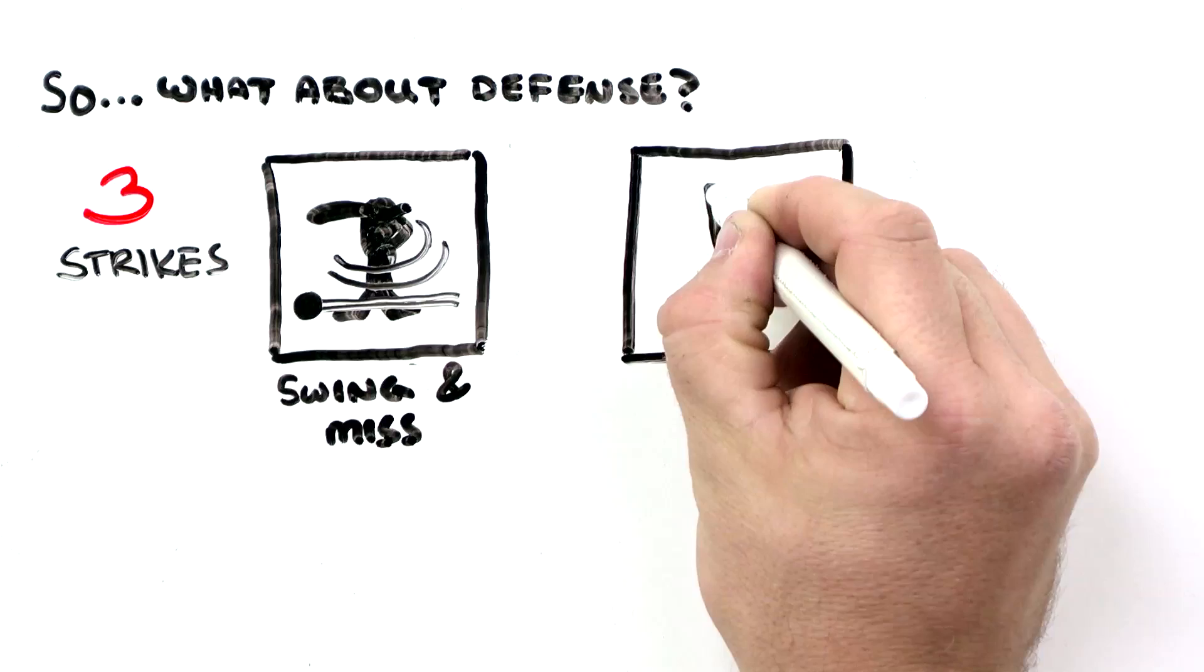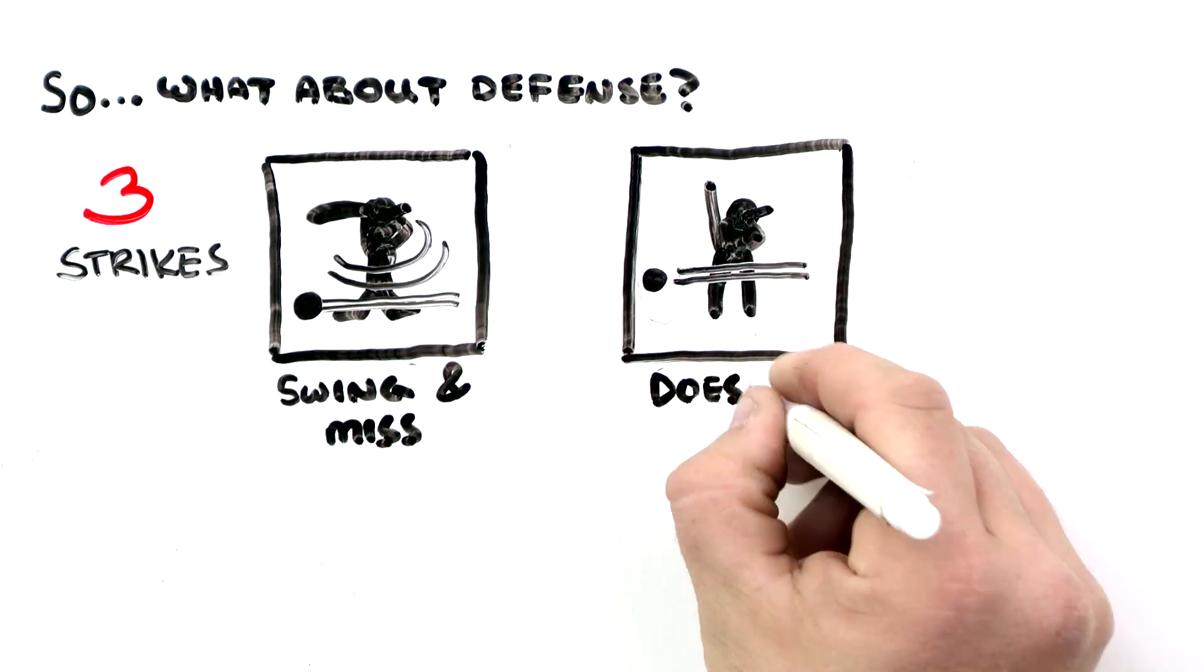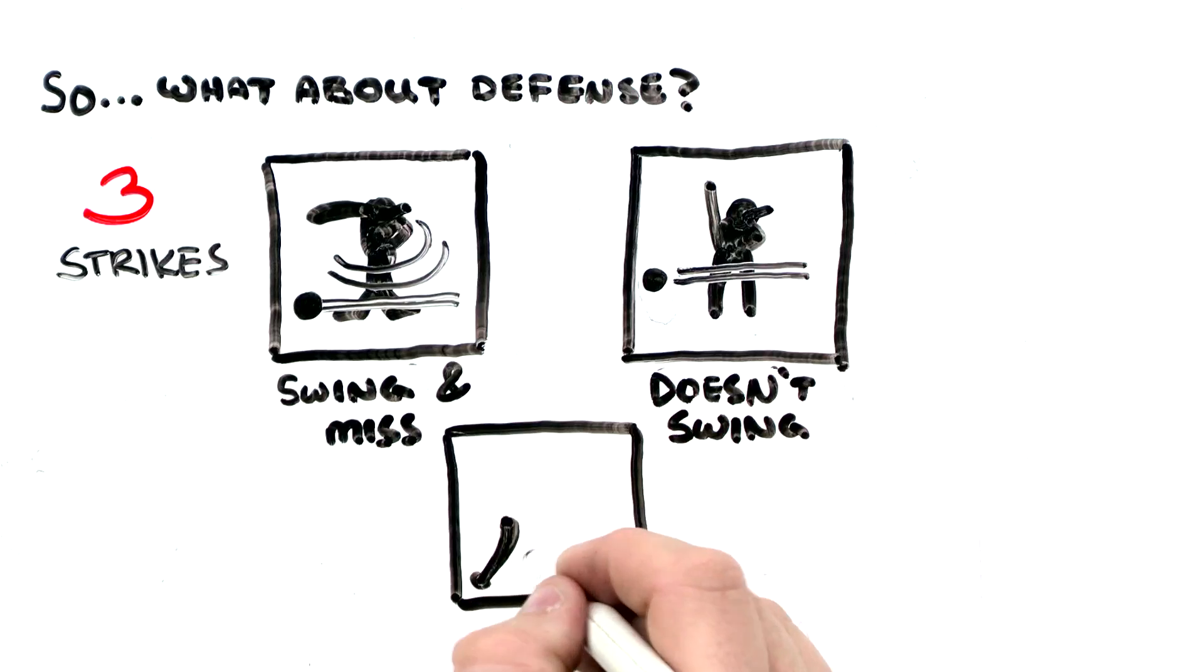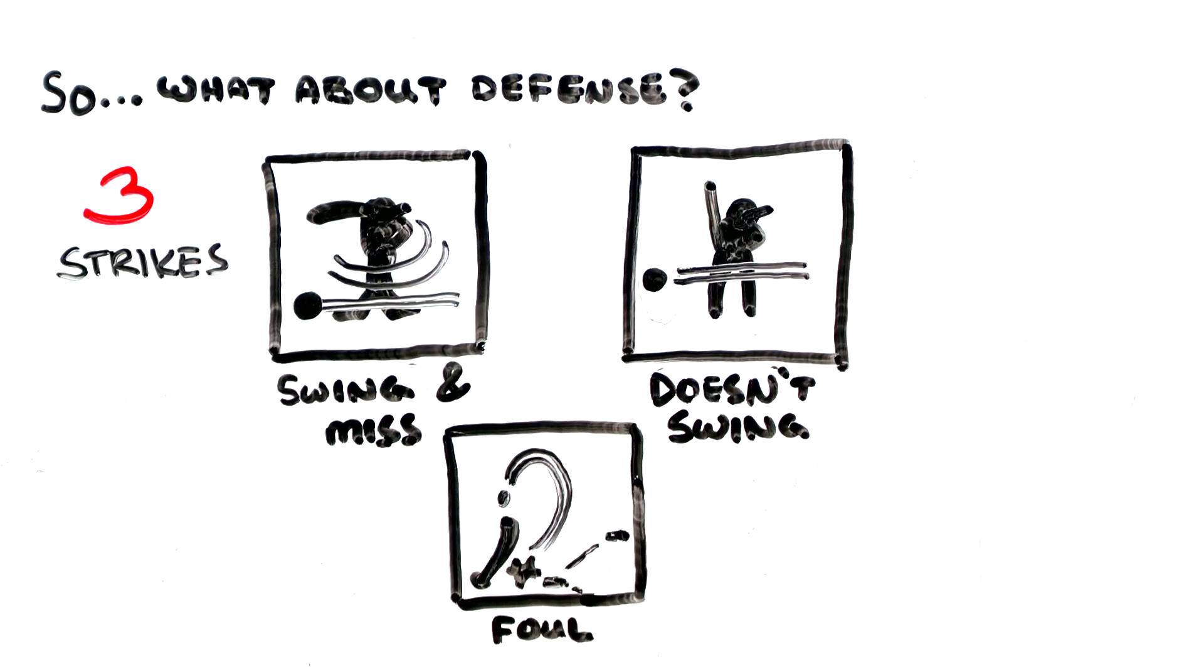Second, a strike is when a batter doesn't swing at a ball that flies over the plate through the strike zone. If the batter hits the ball in foul territory, it can be a strike unless there are already two strikes. Then it's just basically a redo.